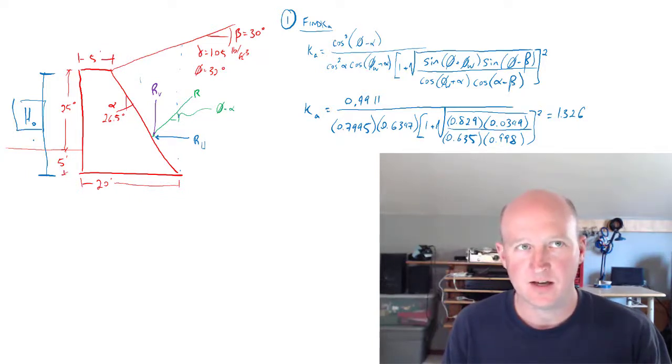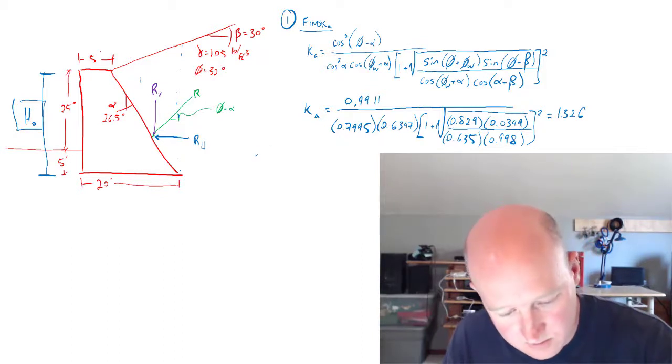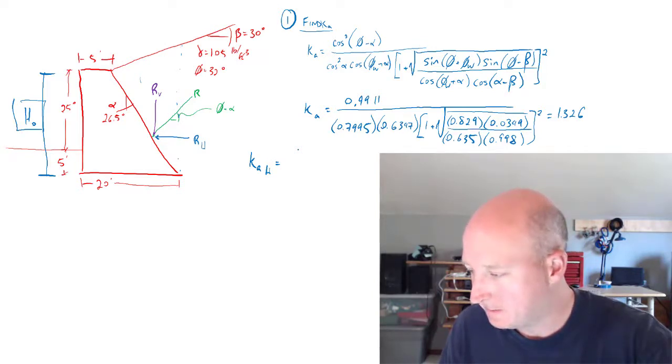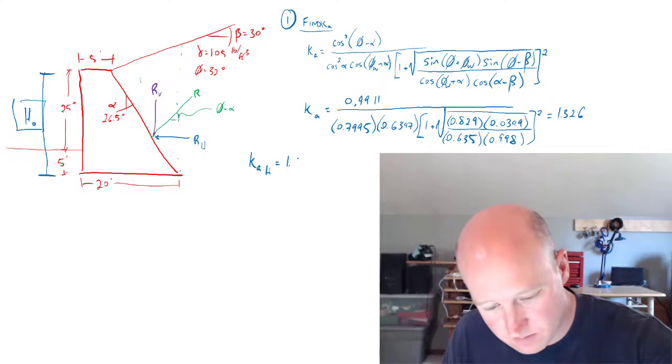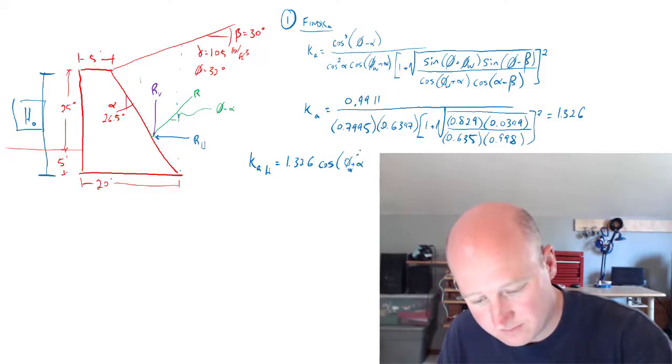So one way to work this problem is to break the k's out as a k for the horizontal and a k for the vertical. And you'll see how they come back together here in just a second. So let me do that part first. So let's say we've got a k that's just the k for the horizontal force.